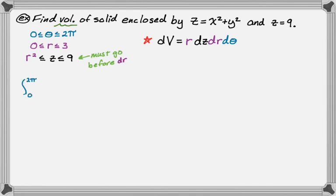So 0 to 2 pi, so that's going to be d theta. And then 0 to 3, that's going to be dr. And then r squared to 9, that's going to be dz. And then we're just integrating dV. So it's r dz dr d theta.